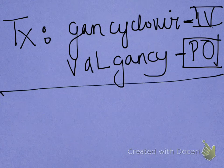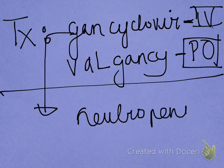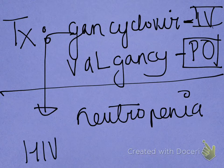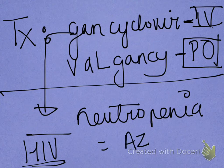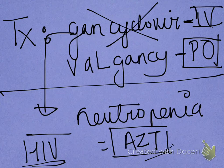The problem with these drugs, especially Ganciclovir, is that it can cause neutropenia. Here's the catch: a lot of HIV patients are already taking AZT. AZT causes macrocytic anemia. And that is why if a patient is already taking AZT, you want to avoid Ganciclovir in those patients — or if you're giving them Ganciclovir, make sure you avoid giving them AZT.